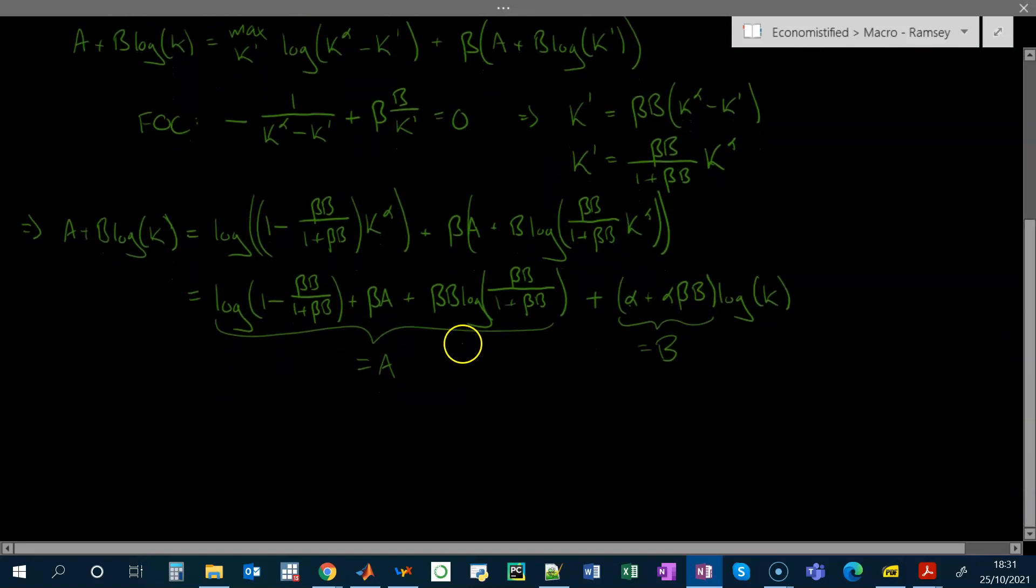I'm going to forget about the constant term because it's just a bit tedious to work it out. You can do that if you want. But we're going to find b just by solving this single equation. So we have b is equal to alpha plus alpha beta times b. Rearranging, of course, we get alpha over 1 minus alpha beta. And that is the coefficient of log k in the value function.